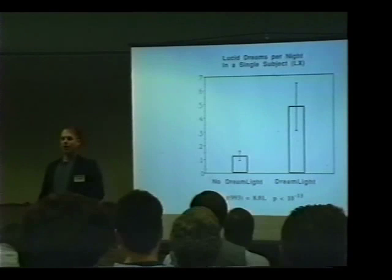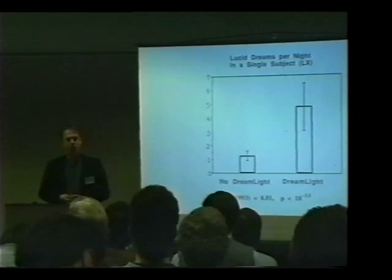One of the advantages of the current Dreamlight is it stores all-night records in its memory — it's a sophisticated little computer. We know what it's doing and can find out how many times the lights flashed last night. If it didn't flash enough, you can adjust it to flash more. If it flashed plenty of times and you didn't see it, it's probably not bright enough — you turn up the brightness. So it's a tool that you use. You have to understand what it can do, but then it's something you can use to have lucid dreams very effectively.